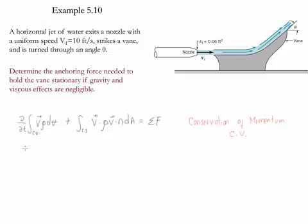Because the case is steady, we are able to drop the unsteady term — it is equal to zero. Looking at the vane, we see that there are two different directions of motion: the x-axis and the y-axis, so we need to rewrite this equation in terms of the two different axes.